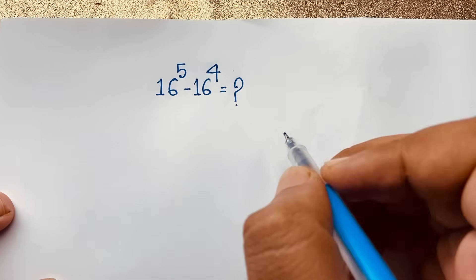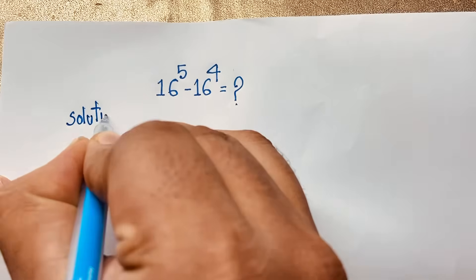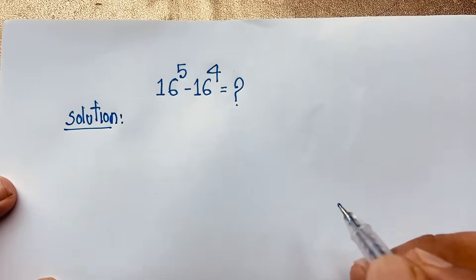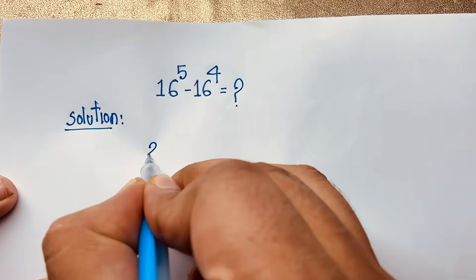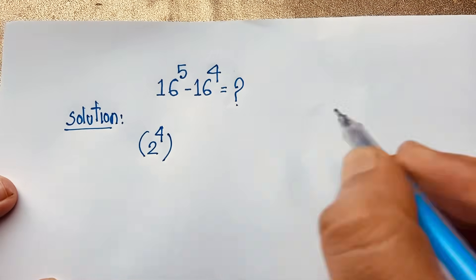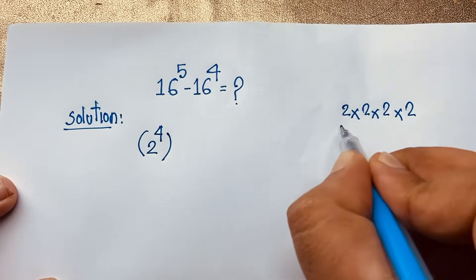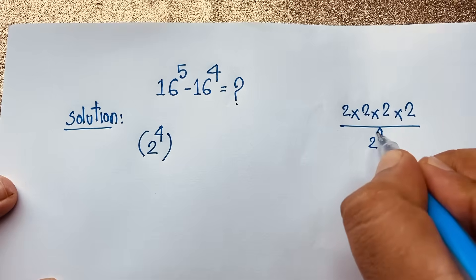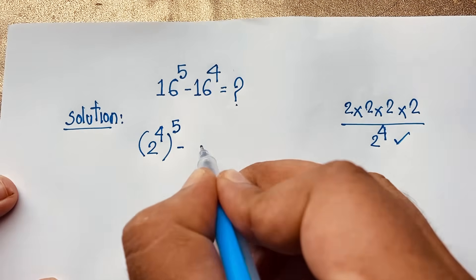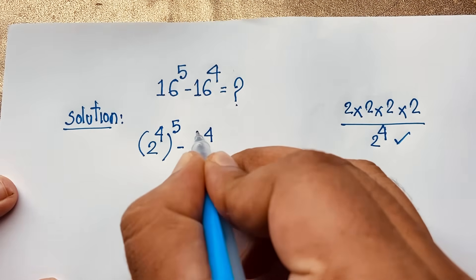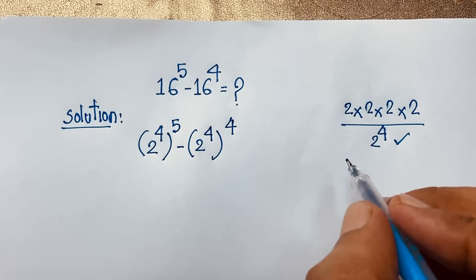Our question is 16 to the power 5. I can say this 16 equals 2 to the power 4, because 2 times 2 times 2 times 2 equals 16. So 16 = 2^4. Now we have 2 to the power 4, raised to the power 5, and similarly for the second term raised to the power 4.